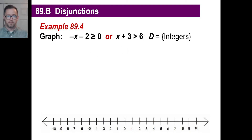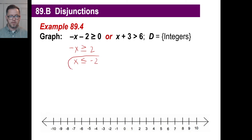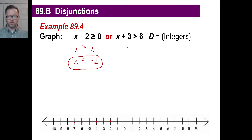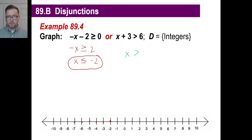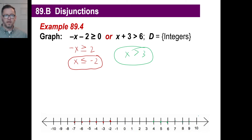Let's try another disjunction. We've got a negative x; we're going to move that over — greater than or equal to 2 — and change that up, so x is less than or equal to negative 2. We are allowed to use integers only. And I'm just going to stop there — you know it includes all the rest. The other part of the disjunction: x is going to be greater than 3. Can't use 3, but we can use 4, 5, 6, and so on. Those are disjunctions.